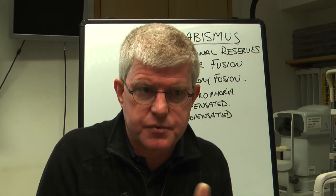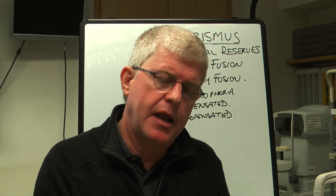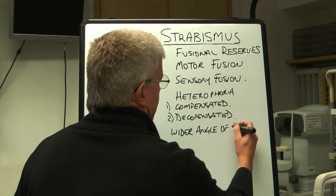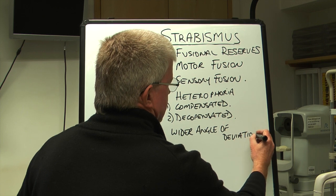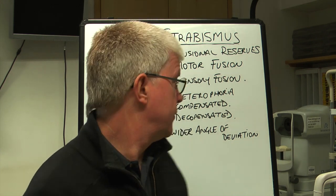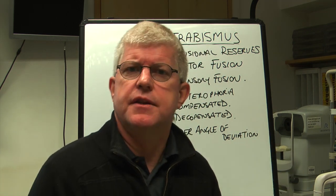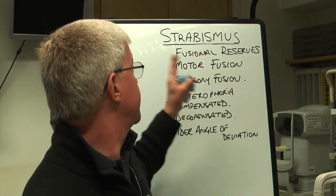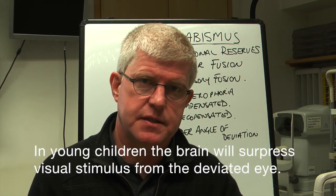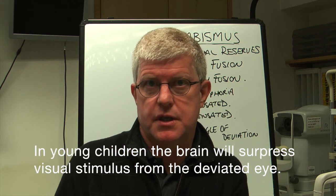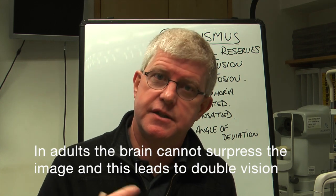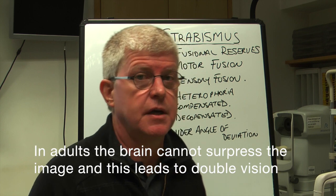With strabismus, we are looking at a wider angle of deviation — so wide that it is impossible to achieve good binocular vision. When this happens in a child, the child does have very good fusional reserves and can kind of overcome that to some degree. But quite often what will happen is that the brain will suppress the eye that's deviating the most, and then amblyopia will start to develop in that eye.